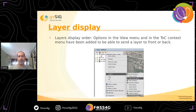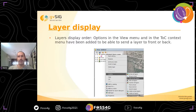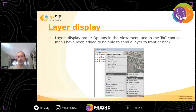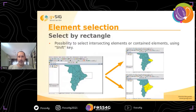I'm going to speak about several new functionalities related to editing. For example, the layer display has been improved in GBSIC 2.5.1 — new options have been included where you can manage the visibility of the layers. There have also been two new functionalities for element selection.